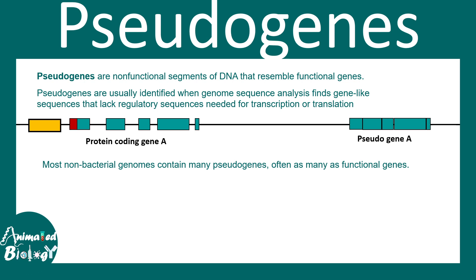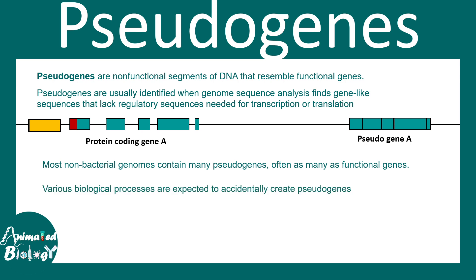Most non-bacterial genomes contain many pseudogenes, and they are as many as the functional protein coding genes. The question is: what are their functions? Are they evolutionary relics, a consequence of an accident, or do they have defined functions? Various biological processes are expected to create pseudogenes — for example, retrotransposition. There exists no specialized mechanism by which these kinds of pseudogenes can be removed from the genome.